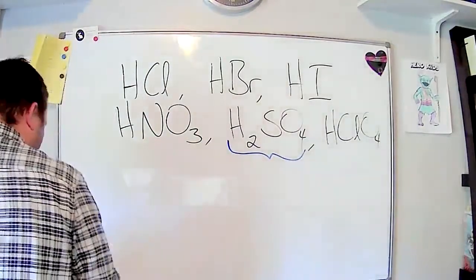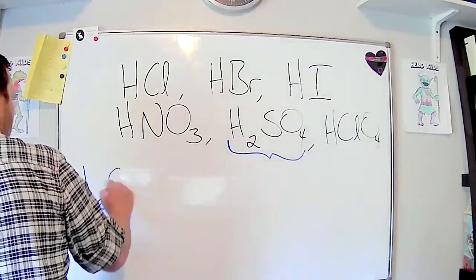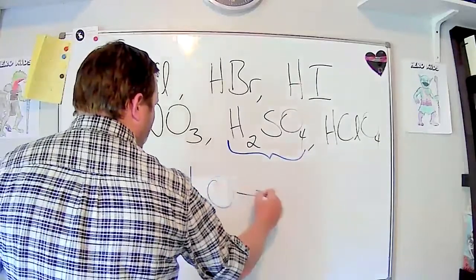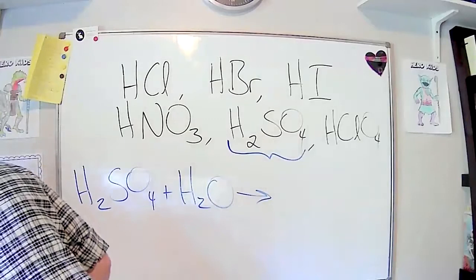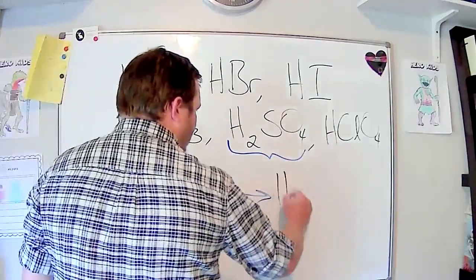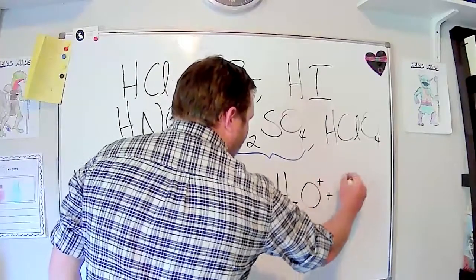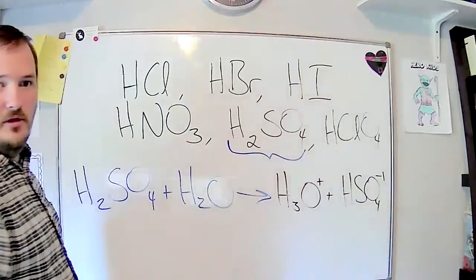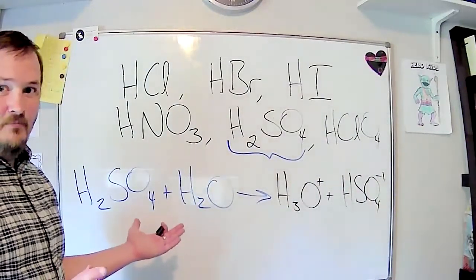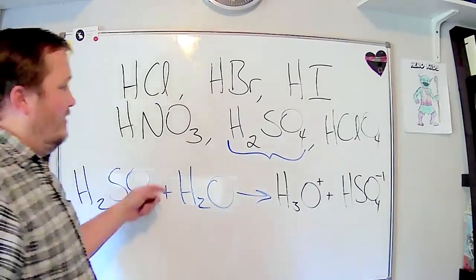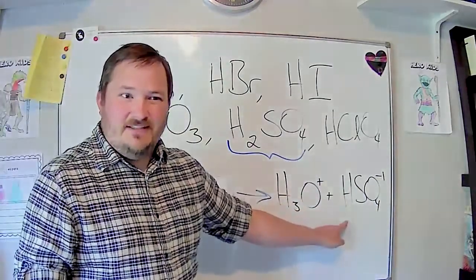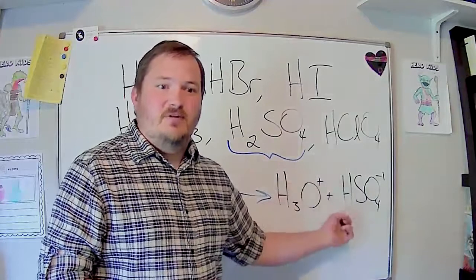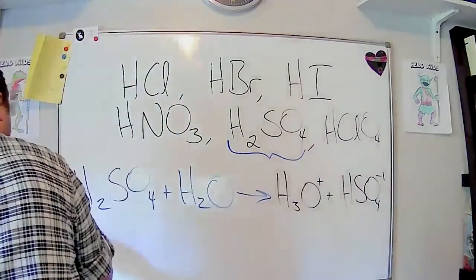The first proton comes off 100% of the time. So H2SO4 plus H2O, it's going to turn into H3O+ and HSO4-. And that reaction happens 100% of the time, within sig figs. This still could lose another H+, but it doesn't do it 100% of the time. It does it such a small percentage of the time we basically ignore the fact that this reaction could happen again.